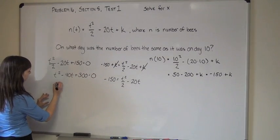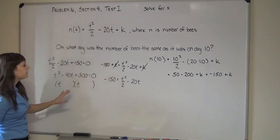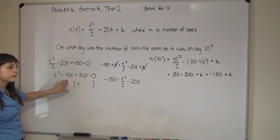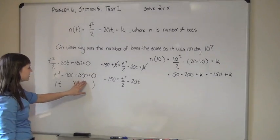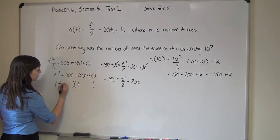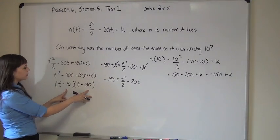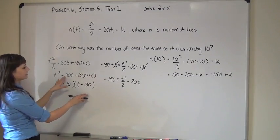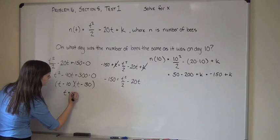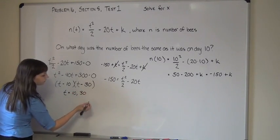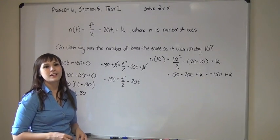This is easier to factor. We need factors of 300 that add to negative 40. We know 10 has to be one of the answers and the other factor will be 30. So we have (t minus 10)(t minus 30) — negative 10 and negative 30, two numbers that multiply to positive 300 and add to negative 40. This tells us the acceptable answers are t equals 10 and t equals 30. Since 10 is the day already given, the other time the value of the function will be the same is at t equals 30.